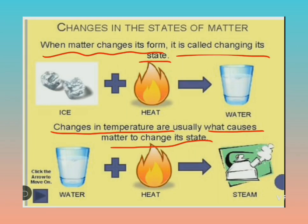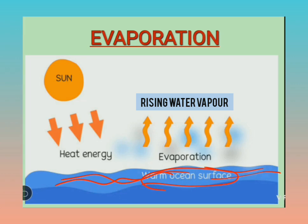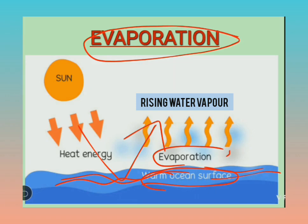Here we discuss four processes through which matter changes its state. The first one is evaporation. When we heat water, it converts into water vapor, which is a gas. For example, if you have a water body — a river, ocean, or sea — sunlight warms the water and water vapors rise from the ocean surface into the atmosphere. The process of heating water into water vapors is called evaporation.